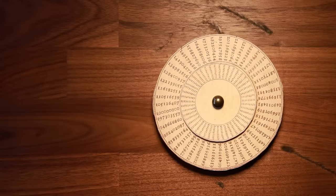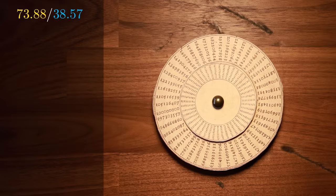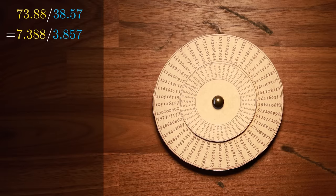Division works in a similar way. To divide 73.88 by 38.57, we first scale each number by 10, since Berge's numbers only go up to 10.